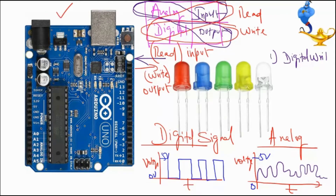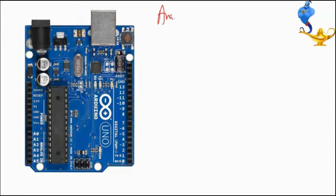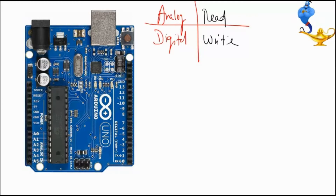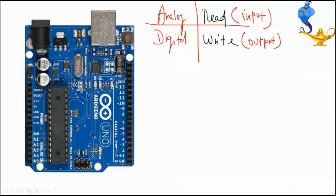I am always speaking with respect to this board. Input means data is flowing towards the board — the board reads the data — so it is analog read. Read means who is reading? Arduino is reading, so the data flows towards it — that is an input for the Arduino.